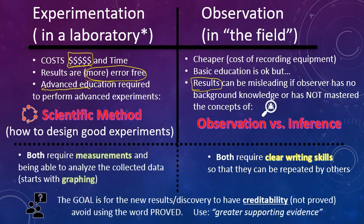The goal for either pathway is essentially the same: to use either path to achieve new discoveries and results that have credibility. That's not to say you've proven everything — don't use the word 'proved.' Anybody who uses the word 'proved' in science really shouldn't be doing that. You can have greater supporting evidence for a hypothesis, but you can't technically prove it. The goal is to give yourself enough credibility that somebody can look at what you did and say that makes sense, or that anyone could have done it — not something indicative only of what you did alone.